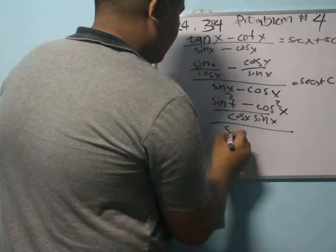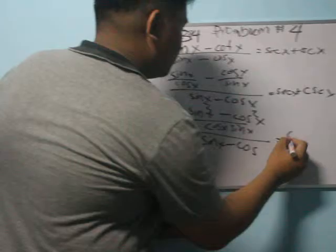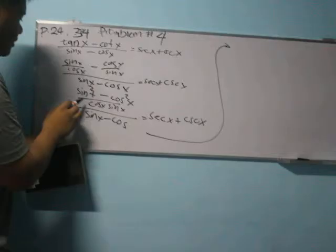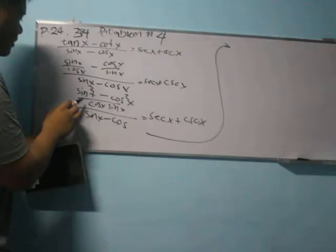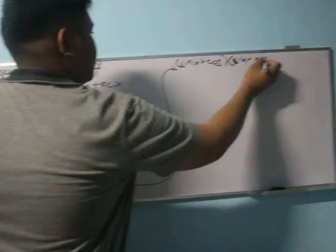All over sin x minus cos x is equal to sec x plus csc x. So sin x minus cos x can be factored out as sin x plus cos x times sin minus cos all over cos x sin x.